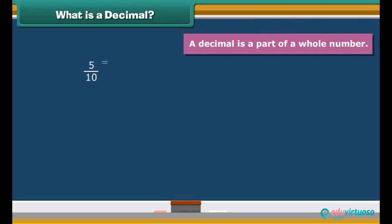Basically, a decimal is a part of a whole number. Look, the fraction 5 by 10 could be written as 0.5.